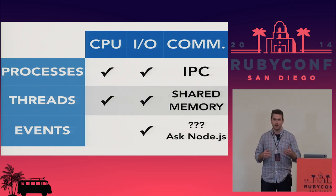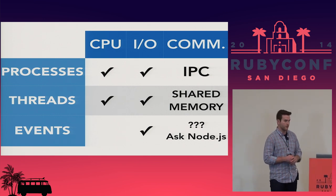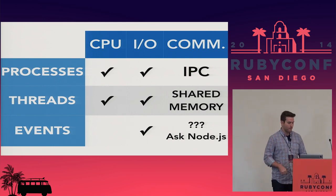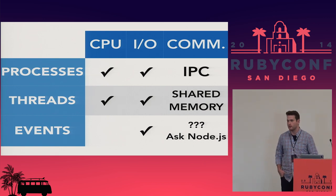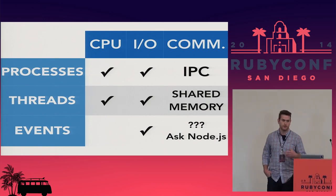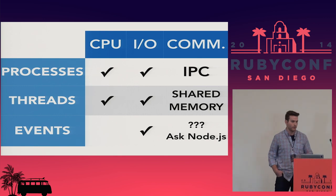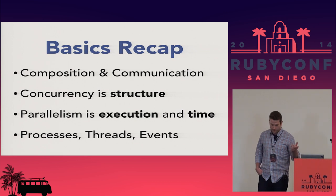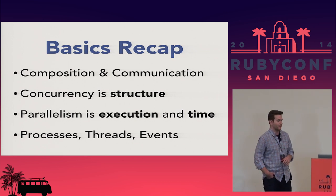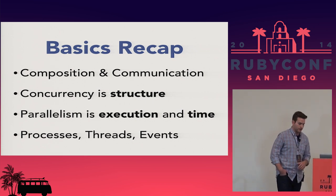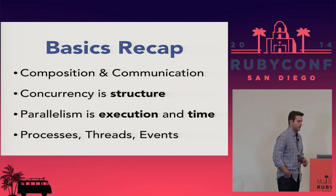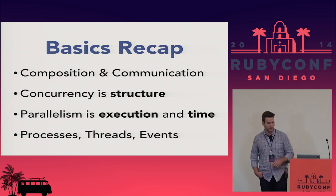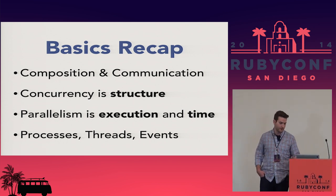Events need to be heavily abstracted — that's why there's that Node.js jab there. By themselves they really get unwieldy. If you look at languages like Clojure and Erlang or Elixir, there are events there but you don't even know it — it's taken care of for you by the runtime. So to recap the basics: concurrency is really about composition and communication. Concurrency is how you structure these programs; parallelism is how they're actually executing at the same time. We have these three primitives in Ruby, of course. But this talk is mostly about threads.